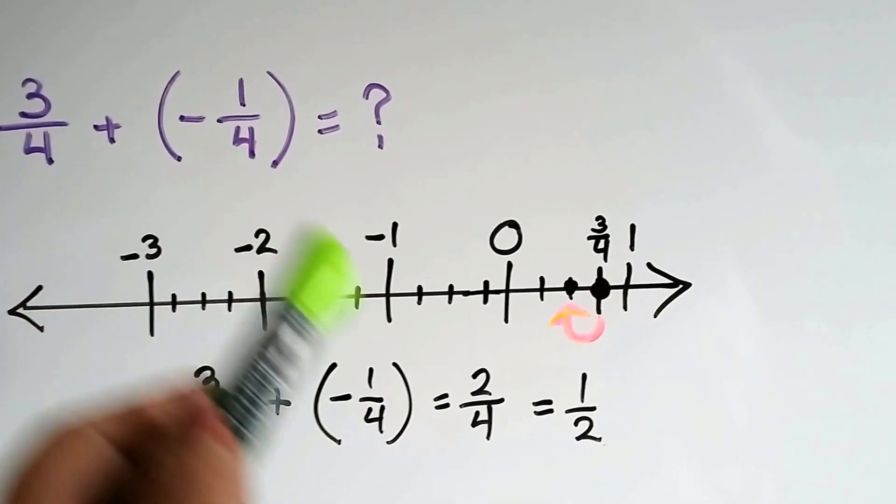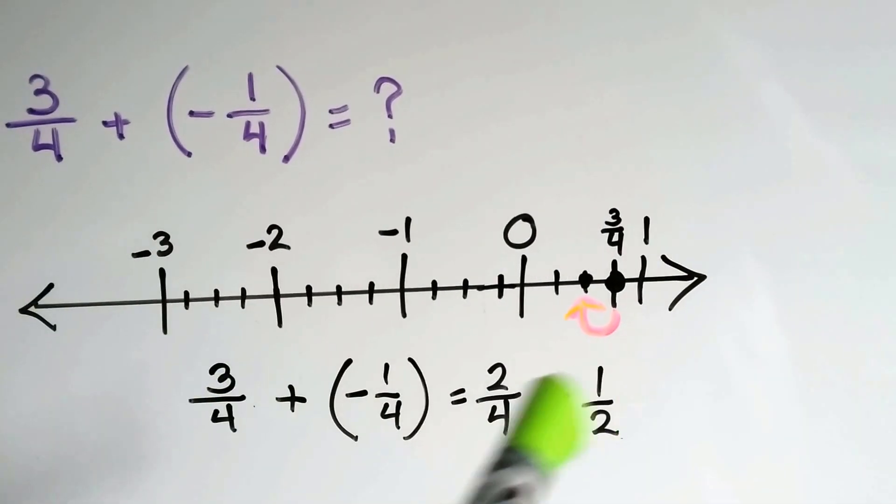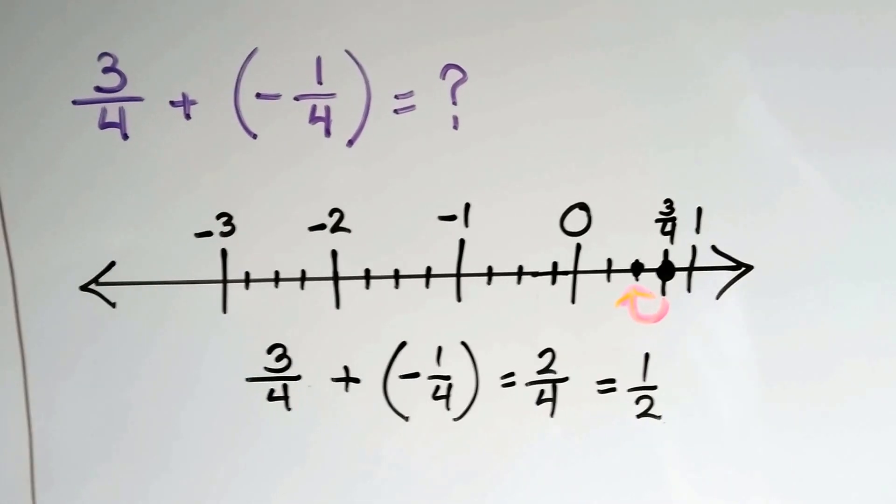And we're going to add negative 1 fourth. That means we're going to go back towards the negative side to the left. And that's going to get us right here to 2 fourths, which is equal to 1 half when we simplify it.